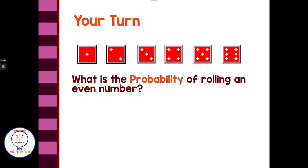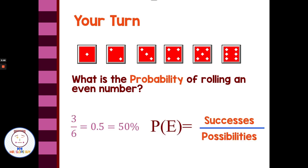What is the probability of rolling an even number? Our even numbers are 2, 4, and 6. So there are three successful outcomes out of six possibilities, giving us a probability of 3 over 6. We can look at that as a decimal or percent — 3/6 is the same as 0.5 or 50%. You'll see those used interchangeably.